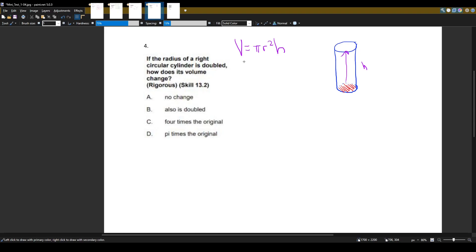So if the radius of a right circular cylinder is doubled, how does this volume change? We want to do a compare.